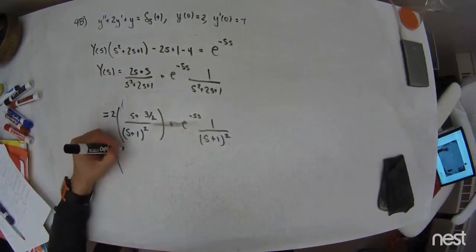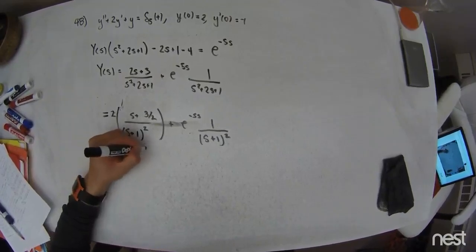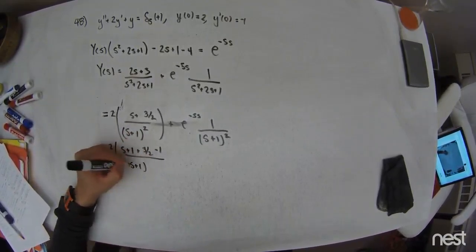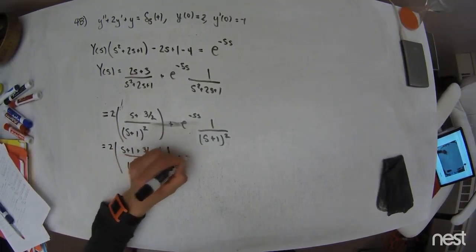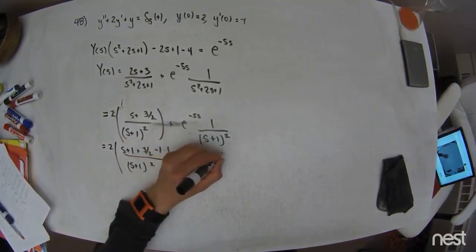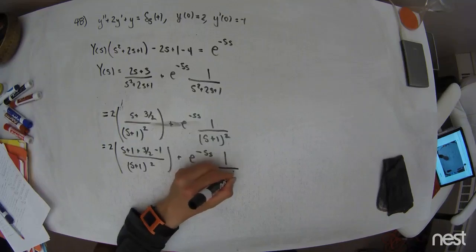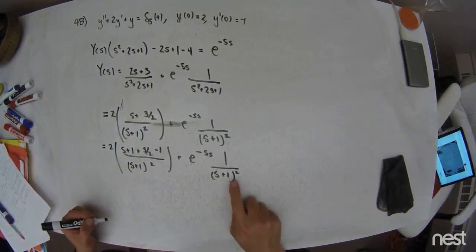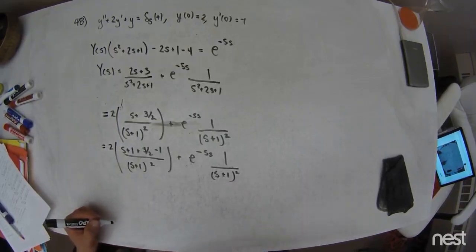So in the numerator here, I have 2, and then I add an S plus 1 plus 3 halves. But I can't add one, so I'll subtract one too, and then I get an S plus 1 quantity squared. Here, I just have an E to the negative 5S times 1 over S plus 1 squared. That's just hanging out. So that is a time delayed TE to the negative T term.